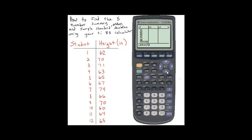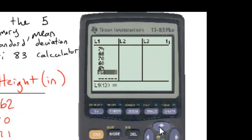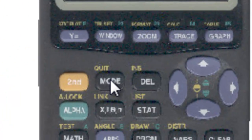Once we have those values in our calculator, we want to check and just make sure again that they're all there. And once we've done that, we'll go out to the home screen by hitting second mode or quit.